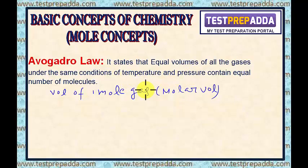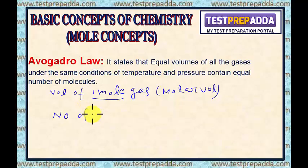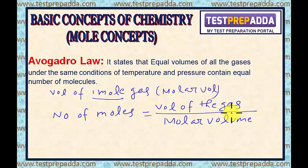Avogadro's law states that equal volumes of all gases under the same conditions of temperature and pressure contain equal number of molecules — or equal number of moles. So if we find the volume of 1 mole of gas (the molar volume), under the same conditions of temperature and pressure, the molar volume of all gases will be the same.